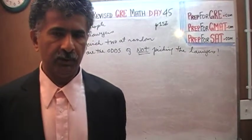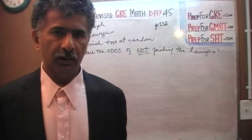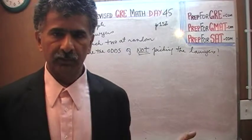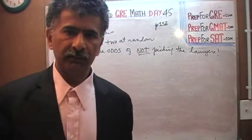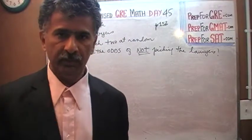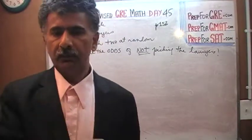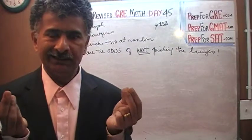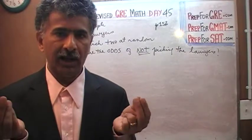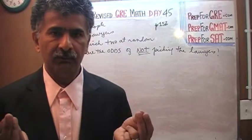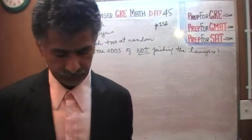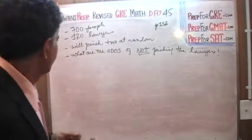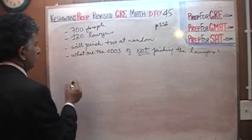We're going to draw at random - two names without replacement, not putting them back. The question is: as we open the two names, what are the odds they're not the names of one of the 120 lawyers in the group? Very simple and straightforward.